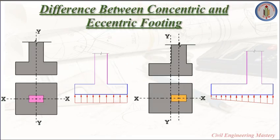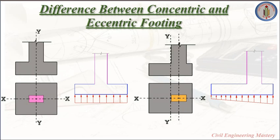Hello friends, welcome back to Civil Engineering Mastery. Generally, footings are the substructural elements which transfer the loads coming from the superstructure to the soil safely. There are many types of footings, but mostly we are confused about eccentric footing. Today we are going to discuss what is concentric footing, what is eccentric footing, how to find out the eccentricity about the axis of the footing, and what are all the causes and practical cases of eccentric footing.